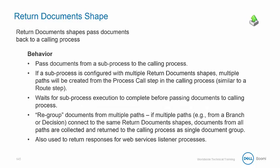The return document shape passes documents back to a calling process — for example, from a subprocess to the calling parent process. If a subprocess is configured with multiple return document shapes, then multiple paths are created from the process call shape in the calling process. This shape waits for subprocess execution to complete before passing documents to the calling process as a group. It is also used with web service listener processes to return responses to the web server.